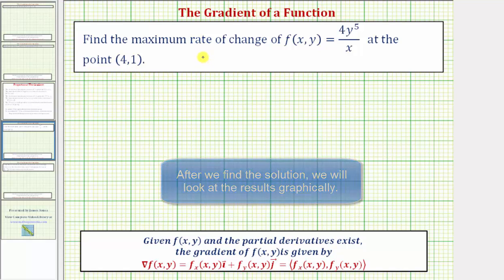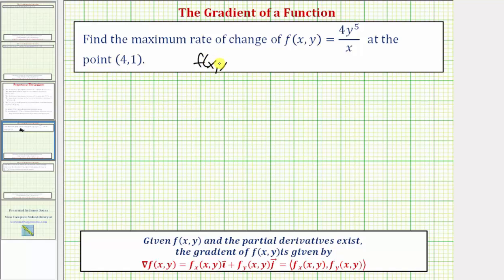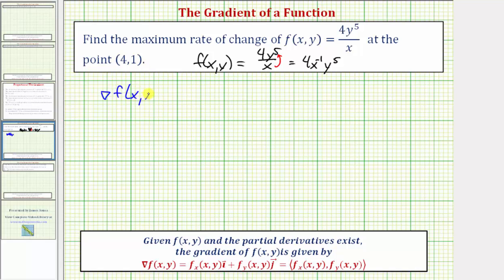The given function is f(x,y) = 4y⁵/x. We can move x to the numerator, changing the sign of the exponent, and write this as 4x⁻¹y⁵. Then we'll find the gradient of f — also referred to as ∇f — by computing the partial of f with respect to x and the partial of f with respect to y.